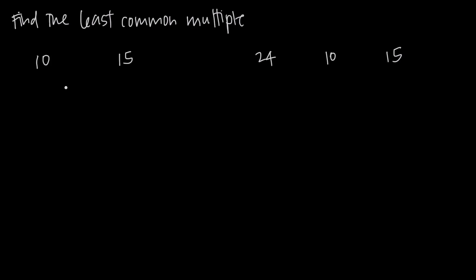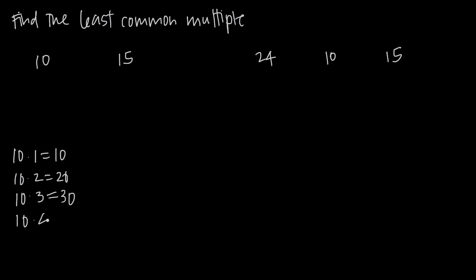So in other words, if we just talk about multiples in general, here we've been given two numbers, 10 and 15. Let's talk about the multiples of 10. When we talk about the multiples of a number, what we mean is: 10 times 1 is 10, 10 times 2 is 20, 10 times 3 is 30, 10 times 4 is 40. So 10, 20, 30, and 40 are all multiples of 10.